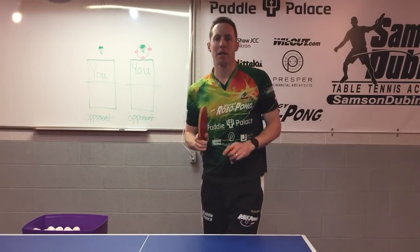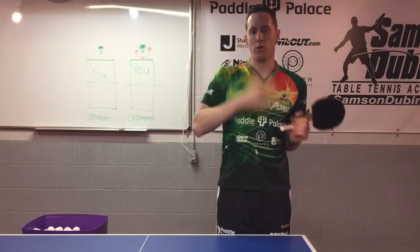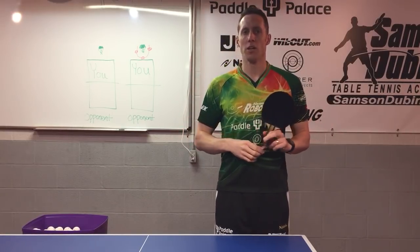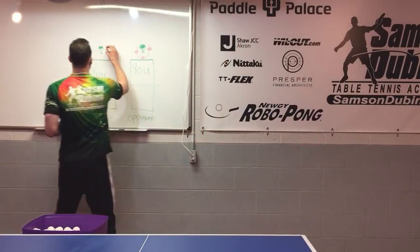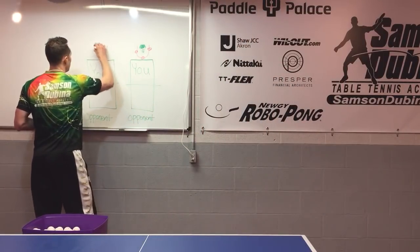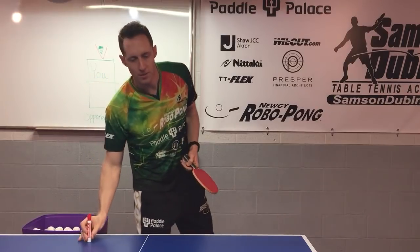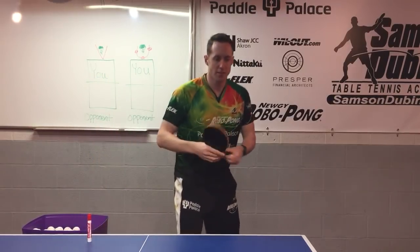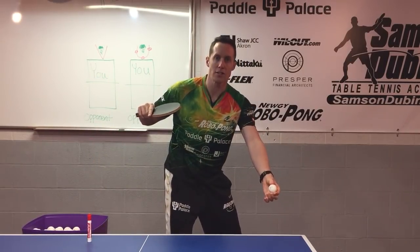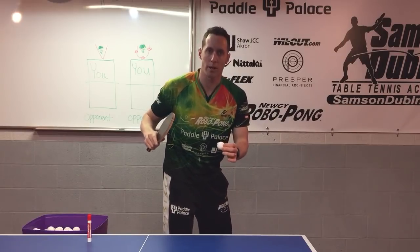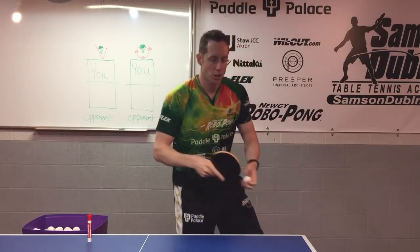Going back to the initial question: what's the difference between a U serve and a V serve? Well, a V serve is more like this — obviously in the shape of a V. So instead of doing a semicircular motion, a V serve has a quicker transition point between backspin, sidespin, and topspin.